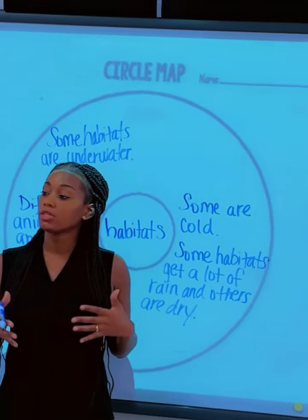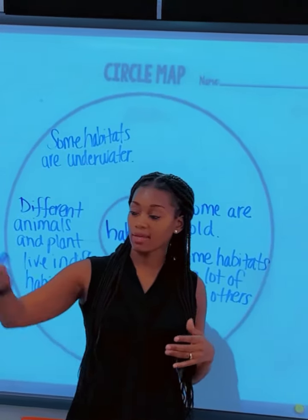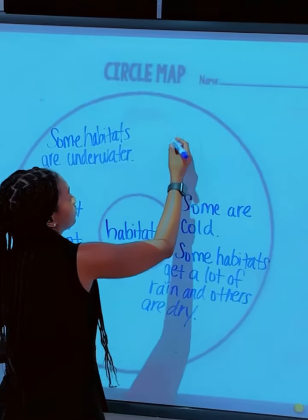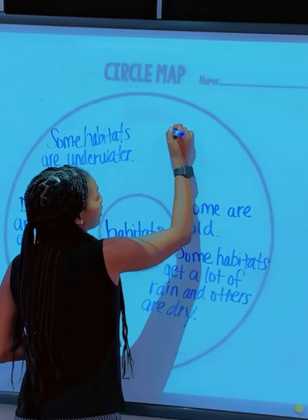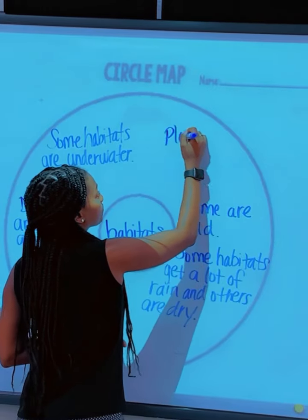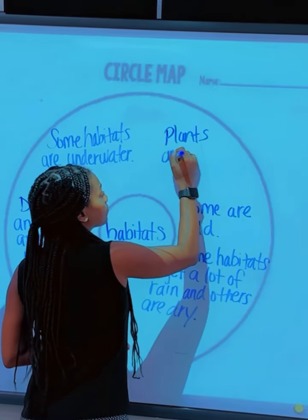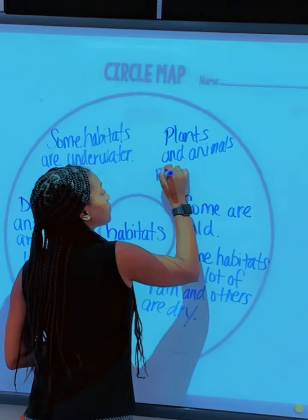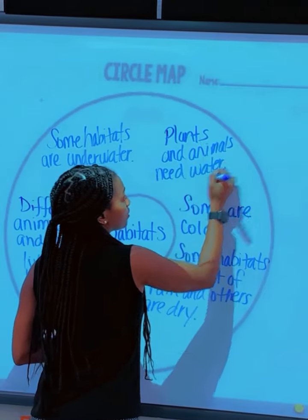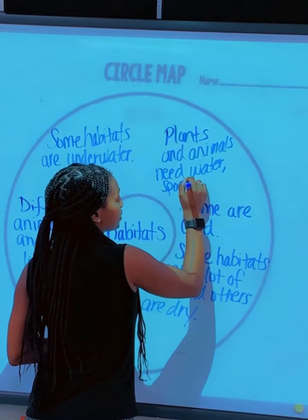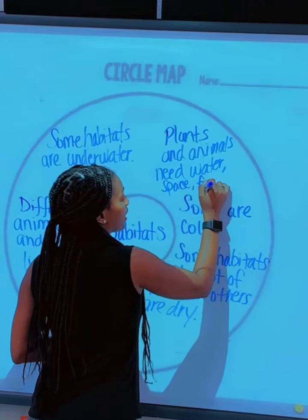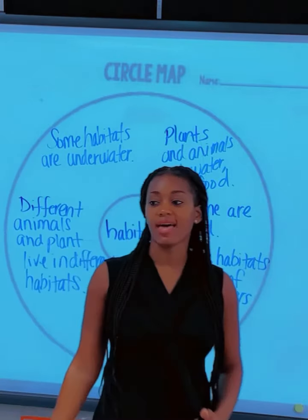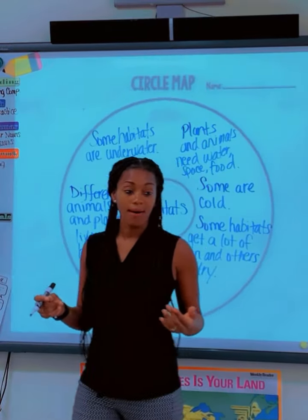Animals need to survive in a habitat. Yes? Oxygen in space. What else? Water. They need water, space as in room to grow, and food to be able to live in that habitat. What else can you tell me about habitats?